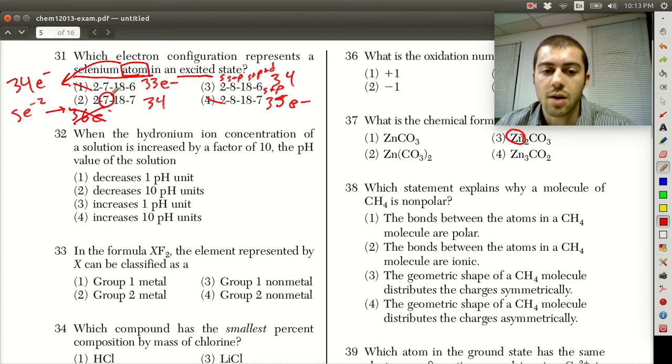If we look at answer choice 2, though, we have 2, 7, 18. So here's this anomaly. We didn't fill this second energy level all the way. We have one electron missing from it.